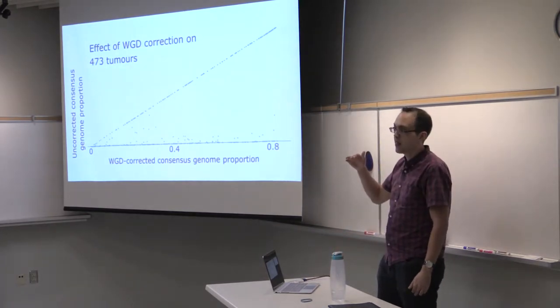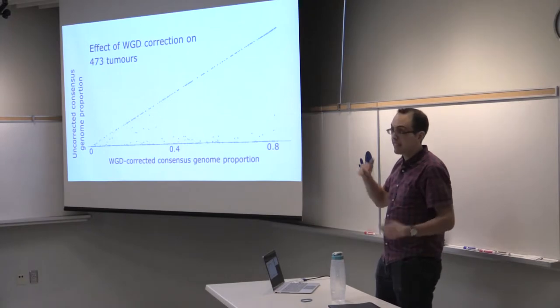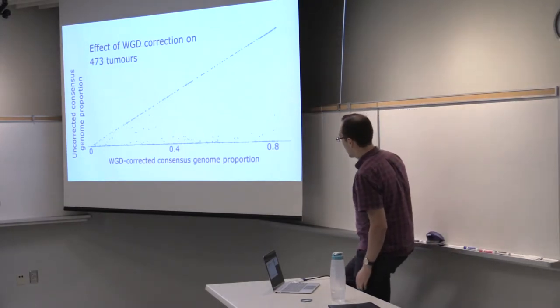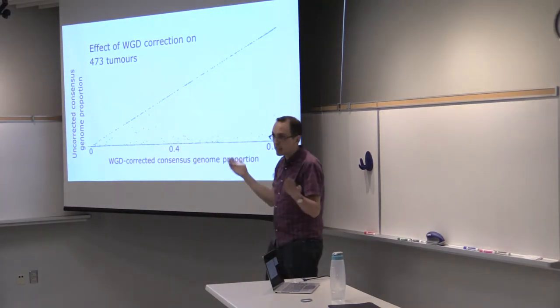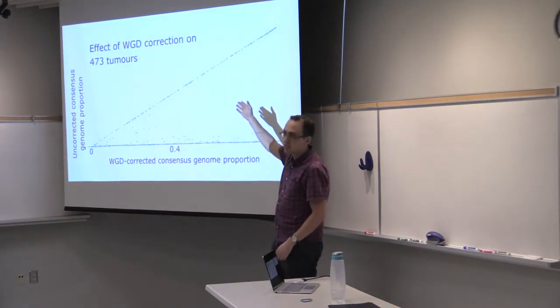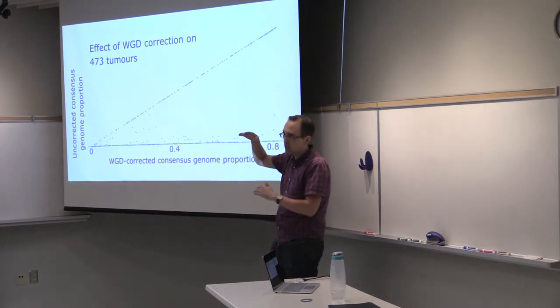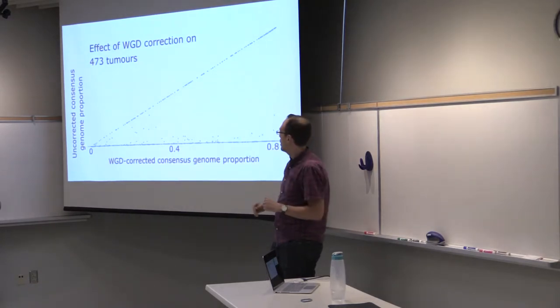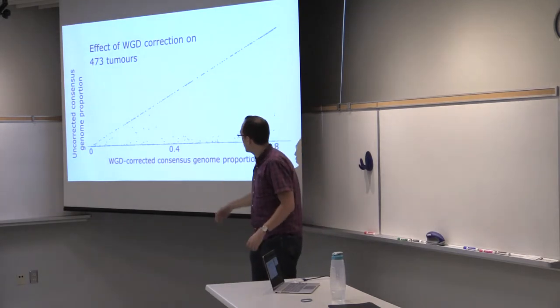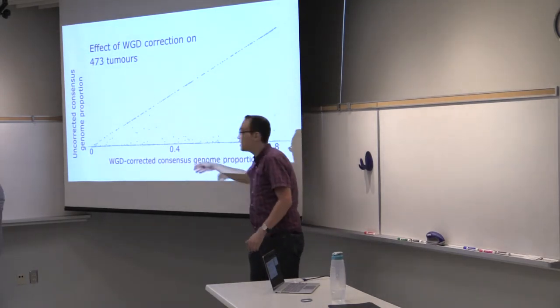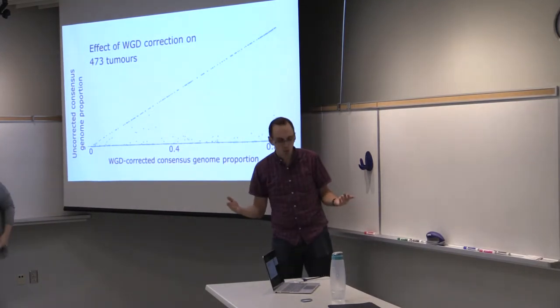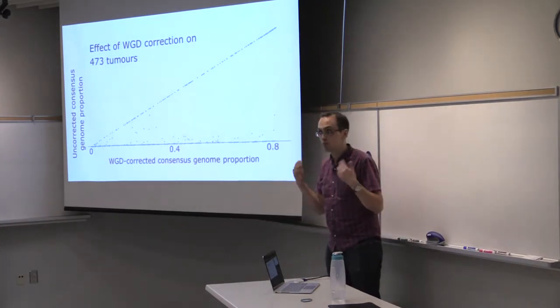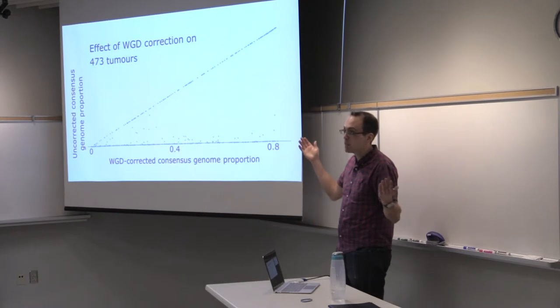With this basic correction, we can really improve methods. Here you see on the x-axis the amount of consensus we were able to achieve between our methods once we did this correction. On the y-axis, what we had before we did any correction. This is across these 473 tumors where we had this whole genome duplication issue. Once we did this correction, for about half of these points, around 250 of them, we could achieve over 50% genome consensus. Even relatively straightforward corrections like this can create a big improvement in your results.